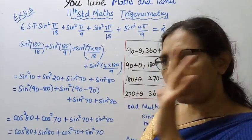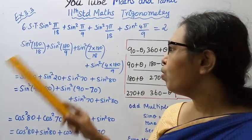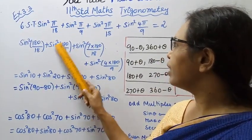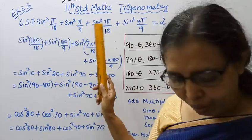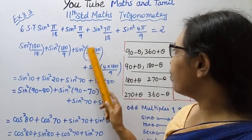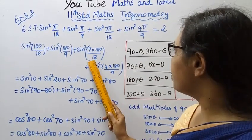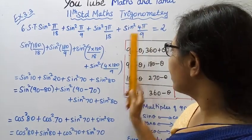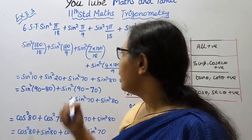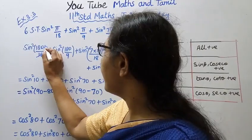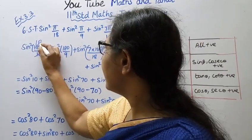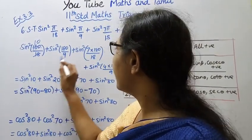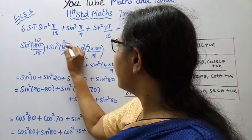Now the sum, sine square π by 18 becomes sine square 180 by 18 plus sine square 180 by 9 plus sine square 7 into 180 by 18 plus sine square 4 into 180 by 9. When we substitute, 180 by 18 is 10 times, so sine square 10. This is 20 times, sine square 20.